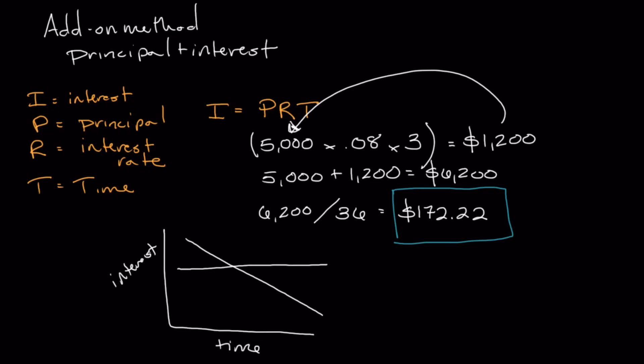That's why the add-on method is confined to only subprime-type consumer loans and is used in very rare cases. It's not common in consumer lending simply because the interest is applied blanketly for the entire duration of the loan, as opposed to on a declining basis tied to the remaining principal. Now that we've determined our monthly payment and total interest of $1,200, we can calculate the Annual Percentage Rate.